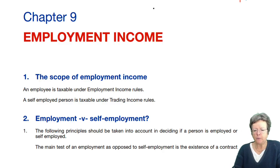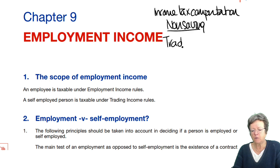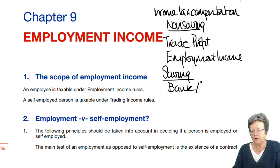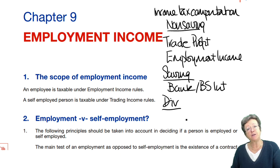When we looked at the income tax computation, we dealt with all sorts of different types of income. In the non-saving section, we had trade profits and employment income. Then in the savings section, there were things like bank or building society interest, and then dividends. All of those rules — how those various sources of income are assessed and taxed — is in the first lecture and recording.